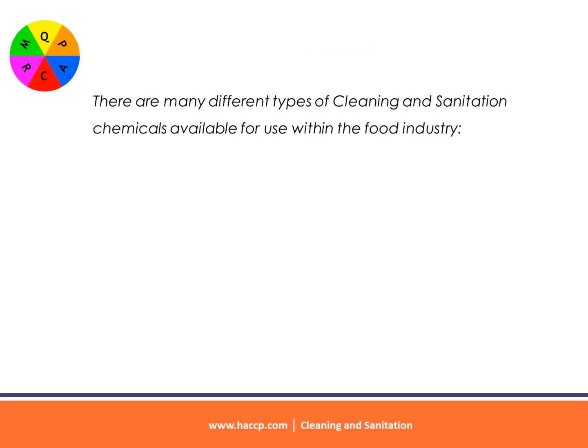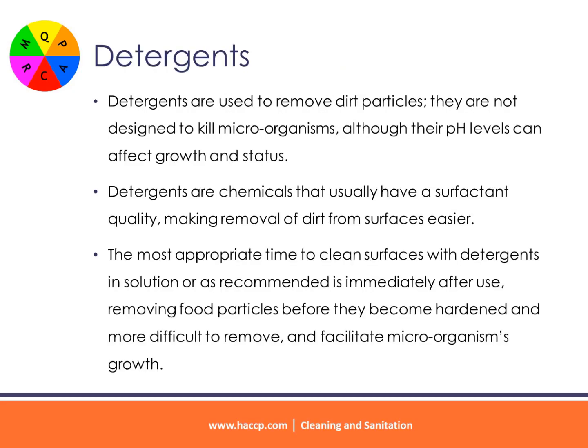There are many different types of cleaning and sanitation chemicals available for use within the food industry. Detergents are used to remove dirt particles and are not designed to kill microorganisms, although their pH levels can affect microbial growth and status. Detergents are chemicals that usually have a surfactant quality, making removal of dirt from surfaces easier. The most appropriate time to clean surfaces with detergents is immediately after use, removing food particles before they become hardened, more difficult to remove, and facilitate microorganism growth.